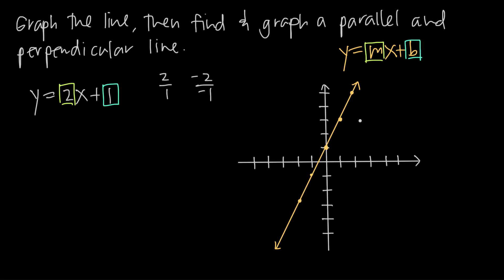Now we need to find a line that's parallel to this one. To find a parallel line, the only thing we're really concerned about is the slope. The slope of our original line is 2. The slope of any parallel line is going to be exactly the same. So if I say y equals 2x plus 4, I use the same slope, and I know that this line is going to be parallel. I could say 2x plus 10 or 2x minus 7 — as long as the slopes are both 2, the lines are parallel.